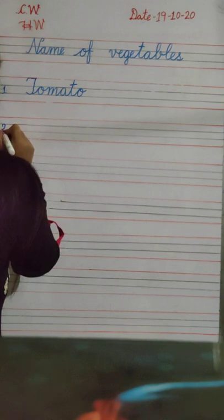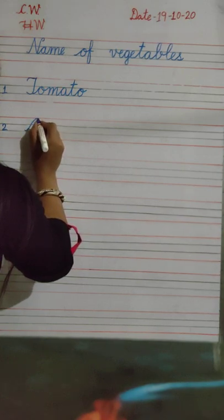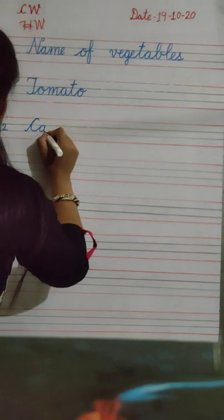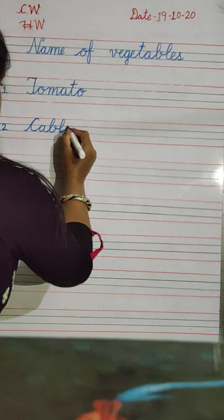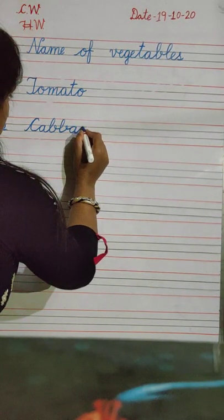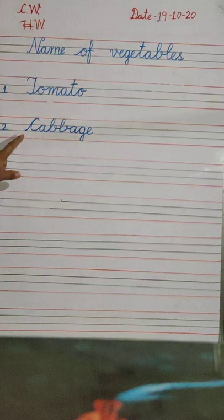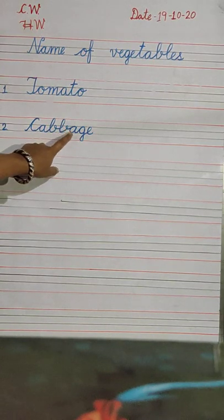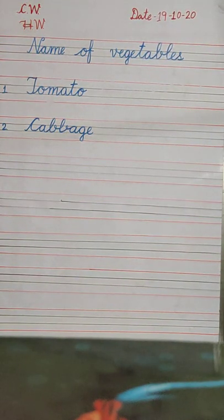Number 2. C, A, B, B, A, G, E. Cabbage. C, A, B, B, A, G, E. Cabbage.